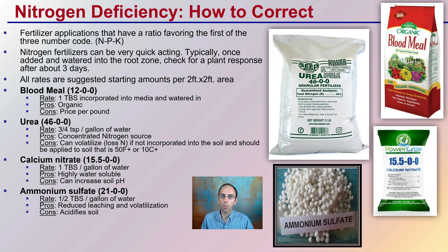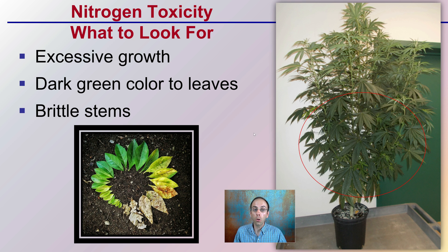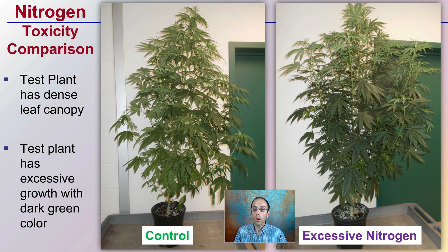But what do toxicity symptoms look like? Looking at the over-applications, this is what a toxic level of nitrogen can look like. You have excessive growth, a very dark green color to the leaves, and brittle stems. Plants can also be very difficult to clone. Here we see that very dark, lush green growth — and comparing it to the control plant, you can clearly see how much darker that green color is. There's a green door and white wall in the background for color balance, but we can definitely see that darker green color with this excessive nitrogen and a very dense canopy from that excessive growth.